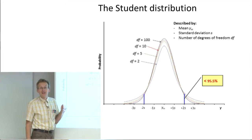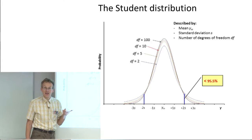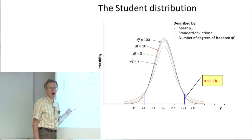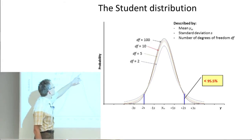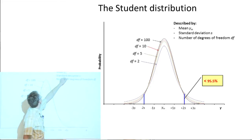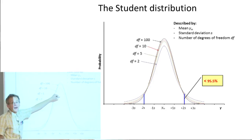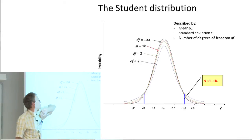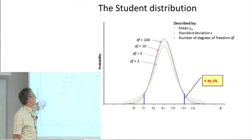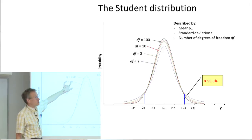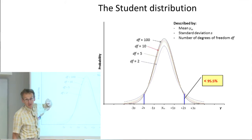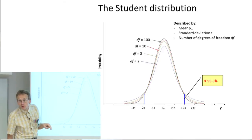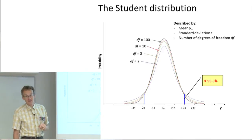The number of degrees of freedom is equal to the number of parallel measurements minus 1. So if the mean value is obtained from 101 measurements, then the number of degrees of freedom is 100. If from 11 measurements, it's 10. If from 6 measurements, it's 5. And if it is obtained from 3 measurements only, then the number of degrees of freedom is 2.